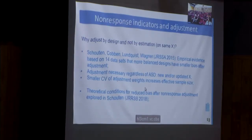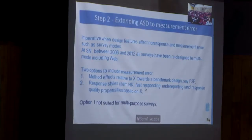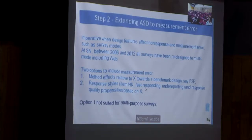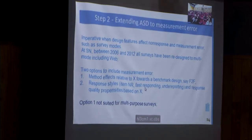There's also a recent paper where I tried to find out what are the theoretical conditions under which adaptive design would be effective. Now the second step: we were very happy until 2010 or 2011 that we had a set of indicators, but then we got frustrated again because modes do not just affect cost or response — they also affect answers, meaning they affect measurement error in survey statistics. Since we were moving at a big scale to multi-mode surveys, we thought we have to think about the impact.